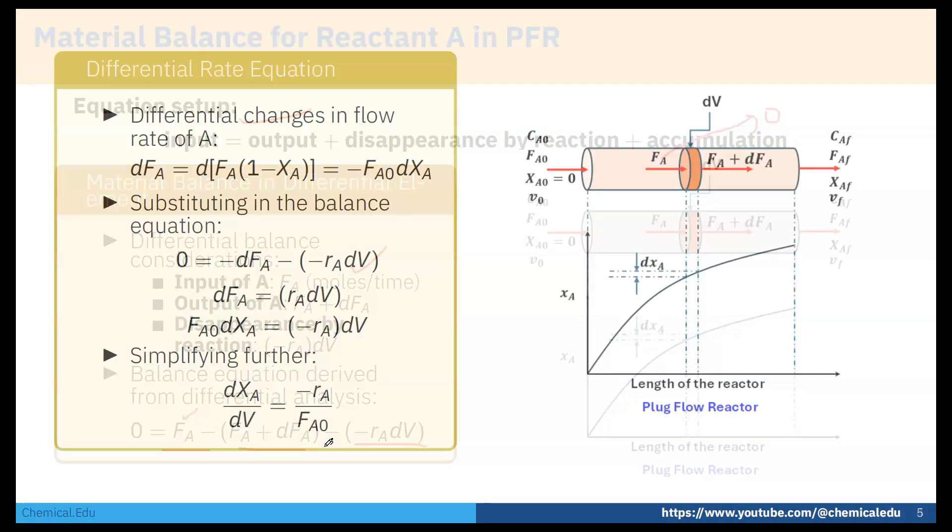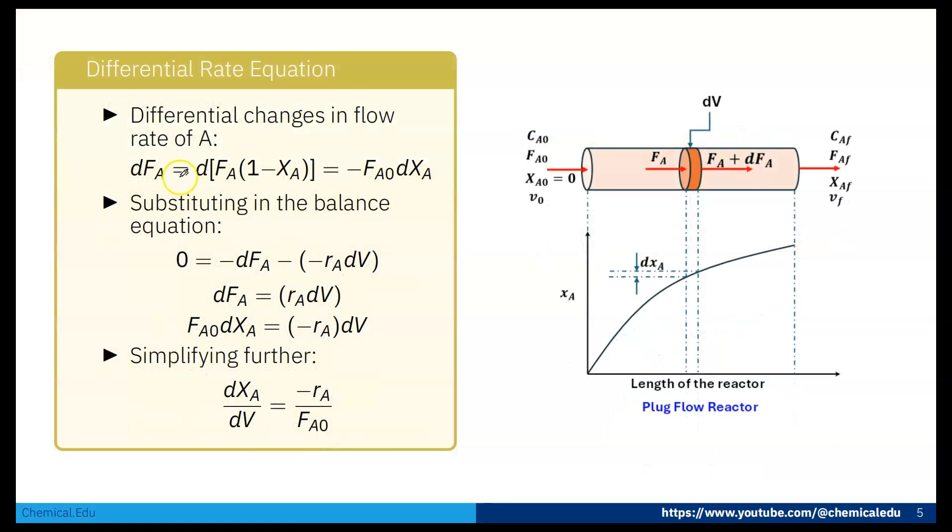Now if we reorganize, dFA is nothing but d of FA. FA is nothing but FA0 times one minus XA. So dFA is FA0 times the differential, which gives minus dXA. Now substituting in the balance equation: zero is equal to minus dFA minus of minus rA into dV, so dFA is nothing but rA into dV.